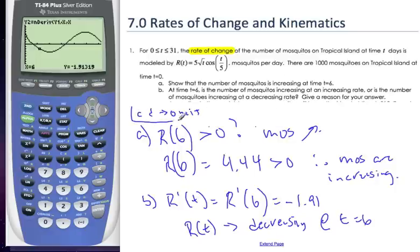In your packet, you have C and D. Omit those because it deals with integration. You'll be able to do those in a few months.